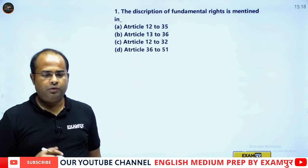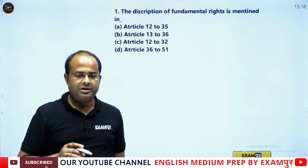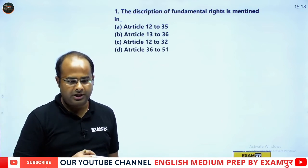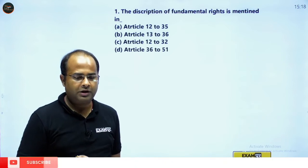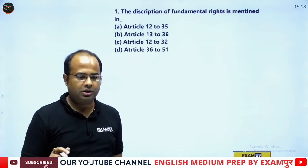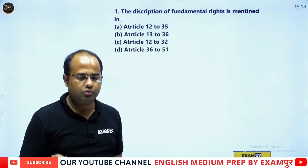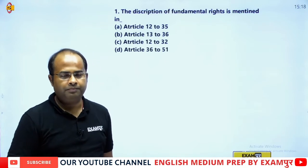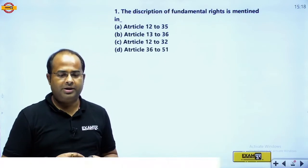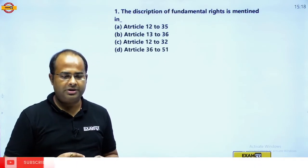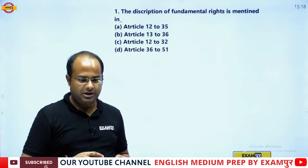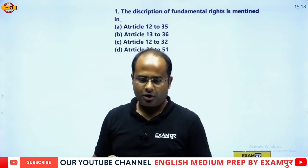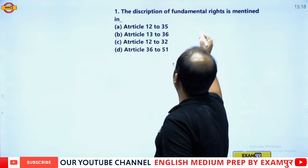The first question: the description of Fundamental Rights is mentioned in which article? Is it Article 12 to 35, 13 to 36, 12 to 32, or 36 to 51? So, the description of Fundamental Rights is mentioned in which article?